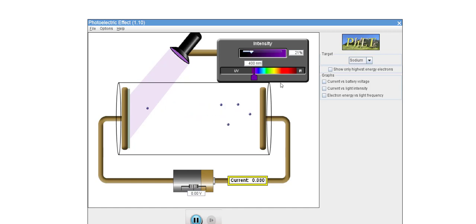For fixed metal, the maximum kinetic energy only depends on the frequency of the radiation. Hopefully, it's quite clear that increasing the frequency has the effect of increasing the maximum kinetic energy. Let's add this to our observations.